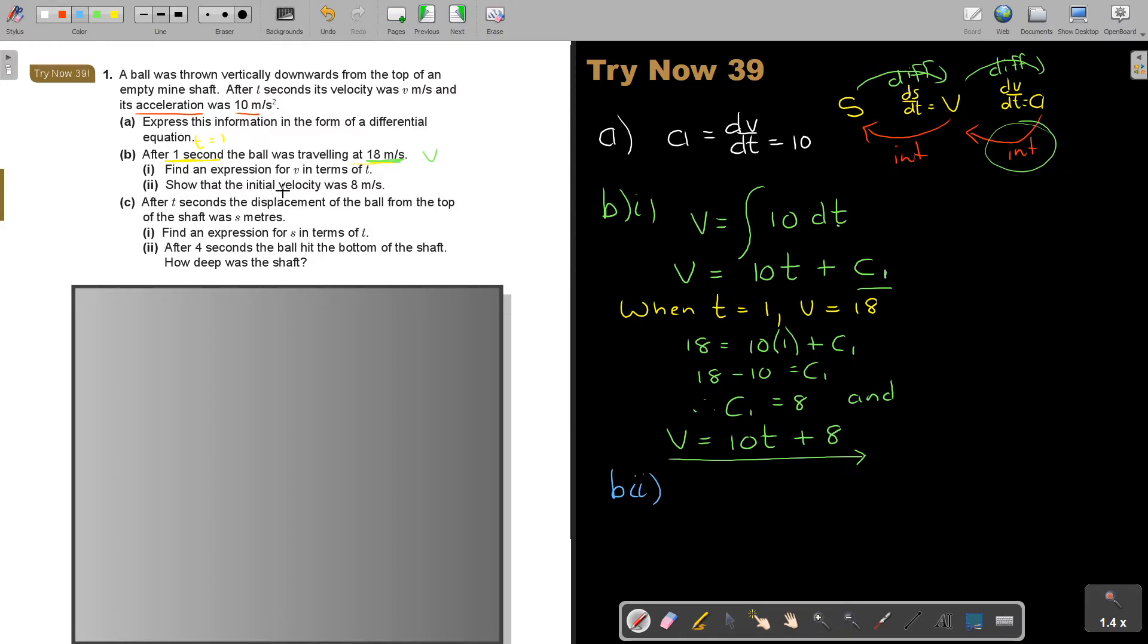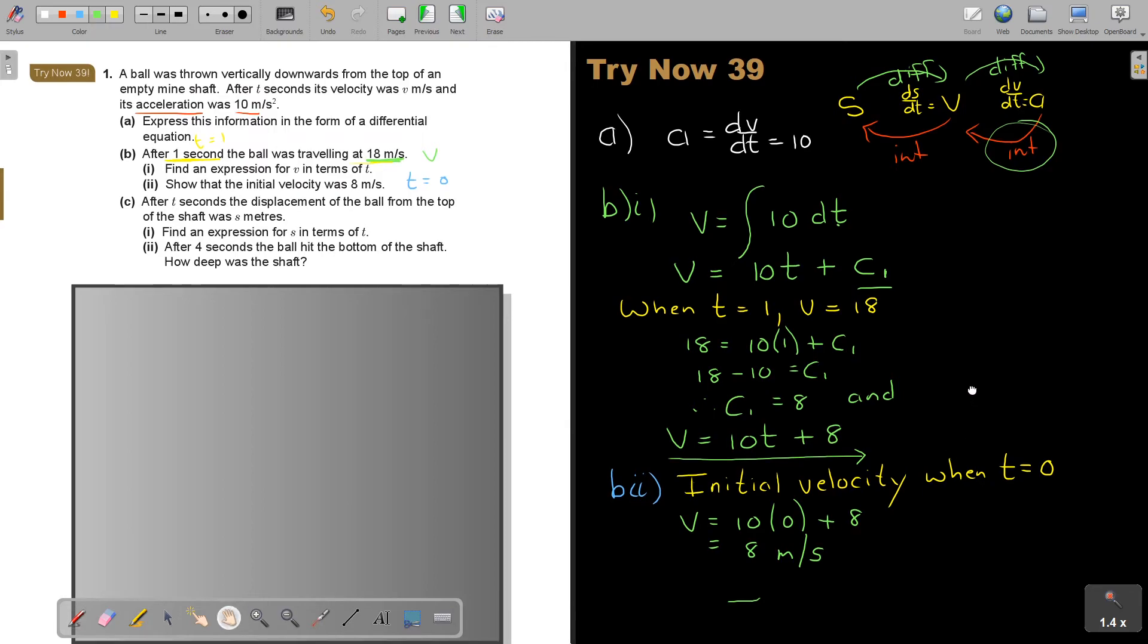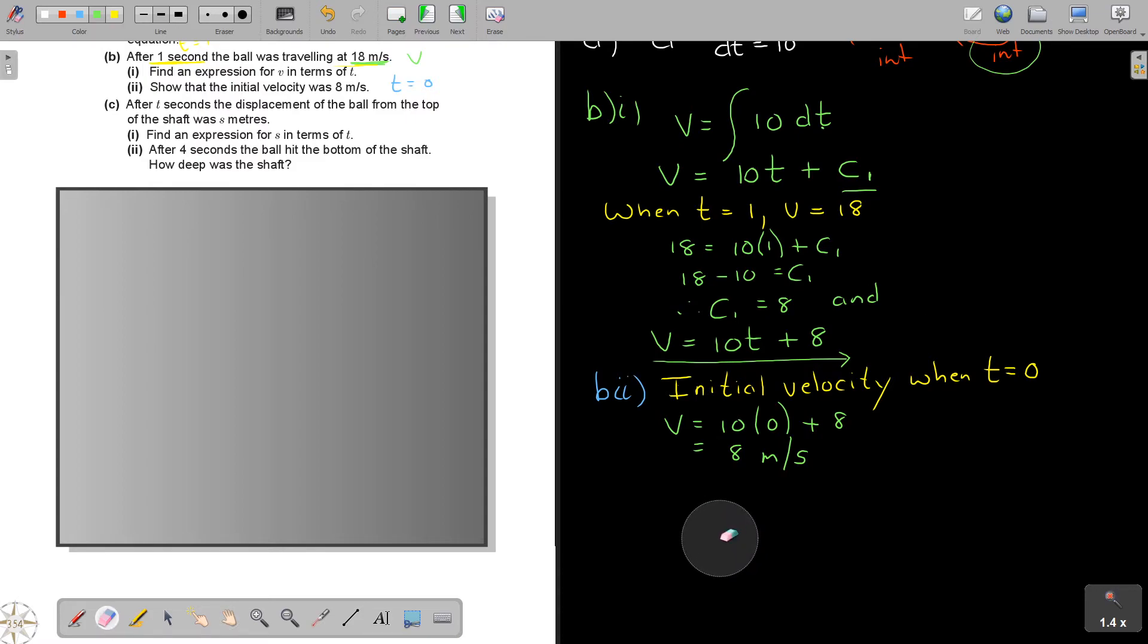Now, I'm starting with the second one, B2. Show that the initial, now remember, initial velocity is always when T is equal to 0. So, I'm just going to say, I like to write in yellow, initial velocity when T is equal to 0. So, that is going to be, now, in the place of T, I'm going to put 0. And that's going to give me that 8 meters per second.